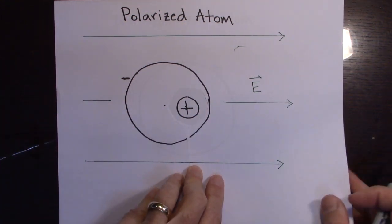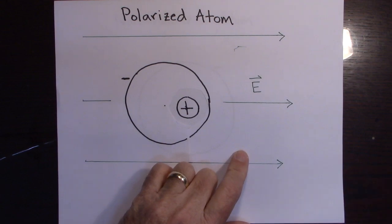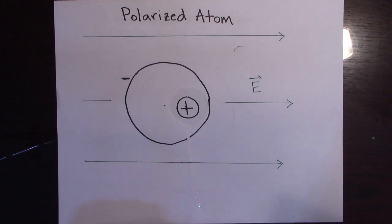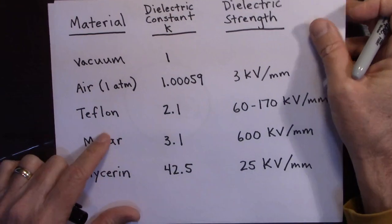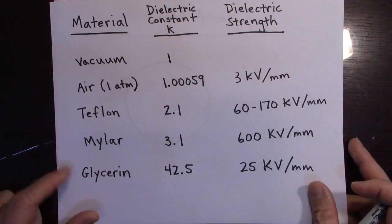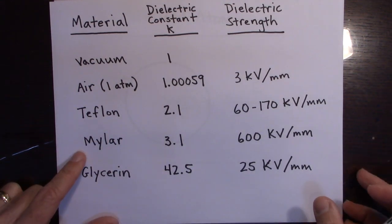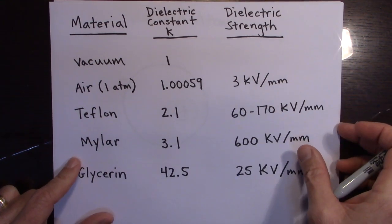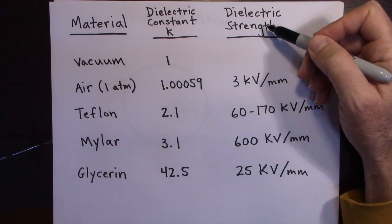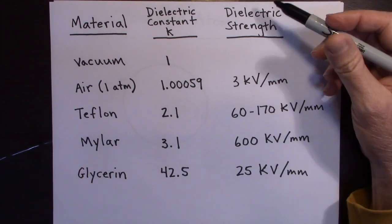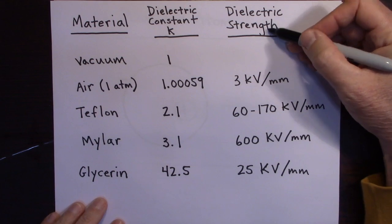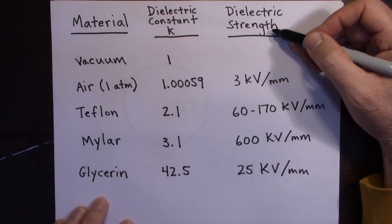Okay, so this is called the dielectric breakdown. And so the strength of the electric field that each of these can handle is called the dielectric strength. So dielectric strength is actually an electric field. I'll say that again. The dielectric strength is actually an electric field.